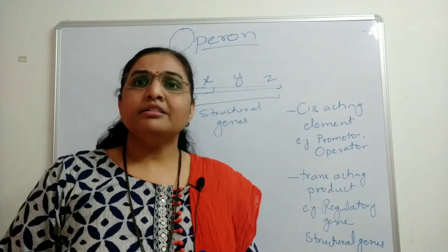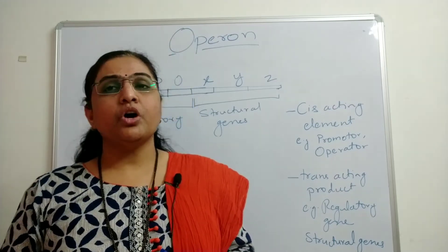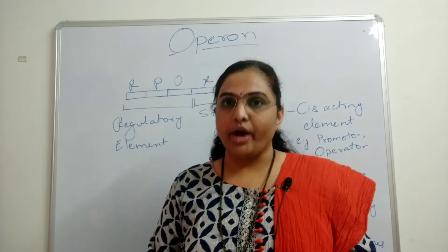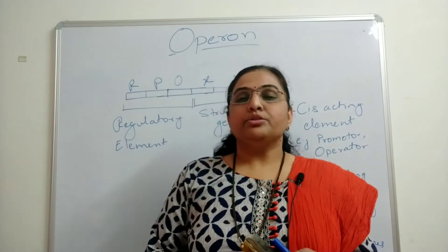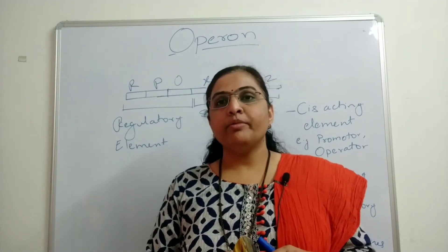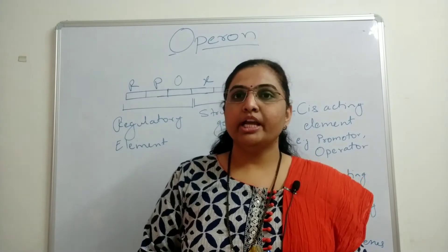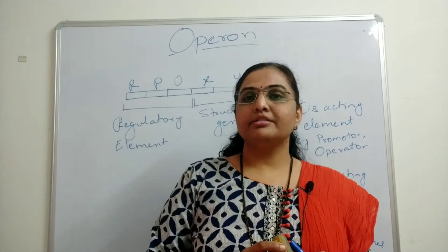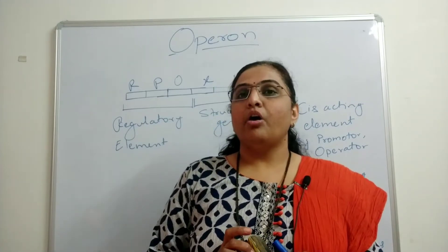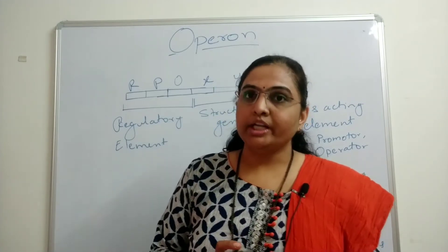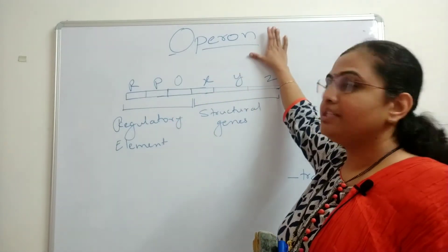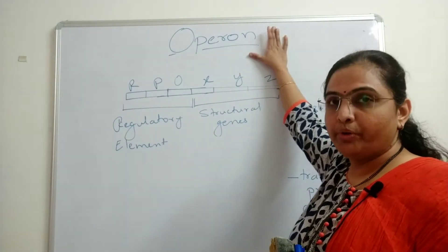There are some genes whose expression is not always required — that is, they have to be regulated. To address this, Jacob and Monod studied it well and gave the model of the operon in 1961.